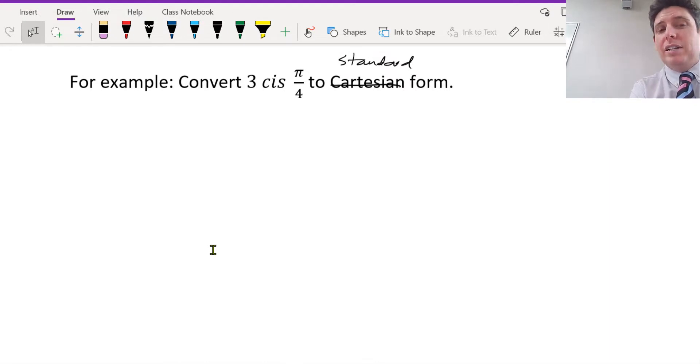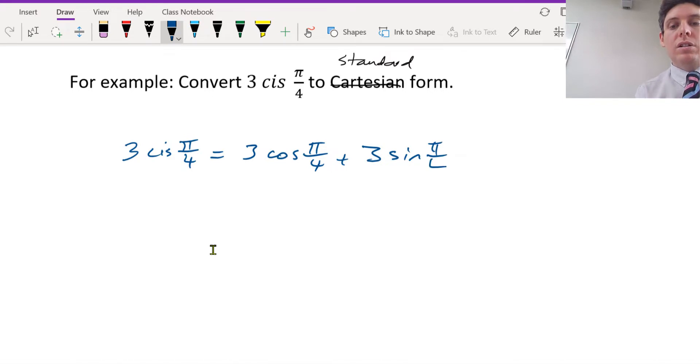It's saying convert 3 cis pi over 4 to standard form, Cartesian form. So you put it in: 3 cis pi over 4 is 3 cos pi over 4 plus 3 sine pi over 4 i.